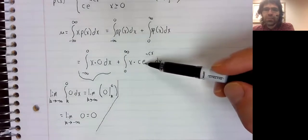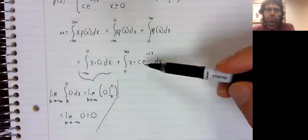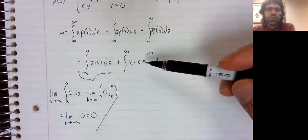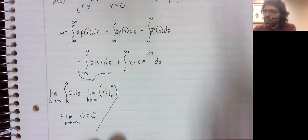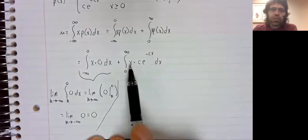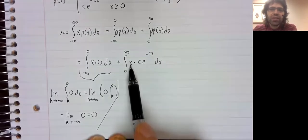And let's see what we see. X times an exponential. This looks like integration by parts to me. Because when you take the derivative of x, you get something nice and simple, you get one.